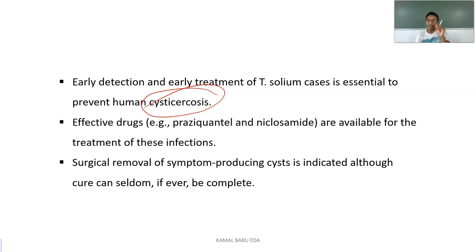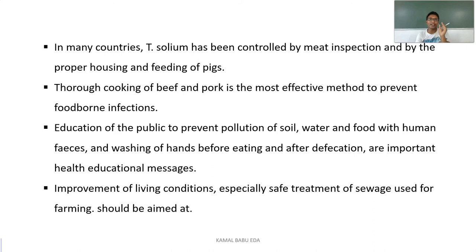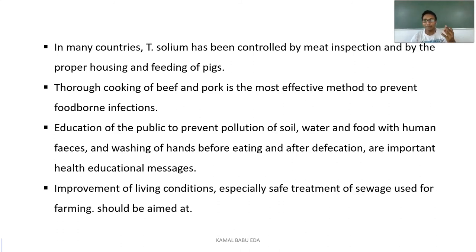Improving living conditions — including treating drinking water and proper sewage treatment — plays a crucial role in controlling Taenia solium. Regarding treatment: praziquantel and niclosamide are both effective in more than 90% of patients. Praziquantel is given as a single dose of 10 mg per kg body weight, with a cure rate of about 99% and minimal side effects. Niclosamide is given as a single dose of 4 tablets — 2 grams — and also achieves more than 90% cure rate.